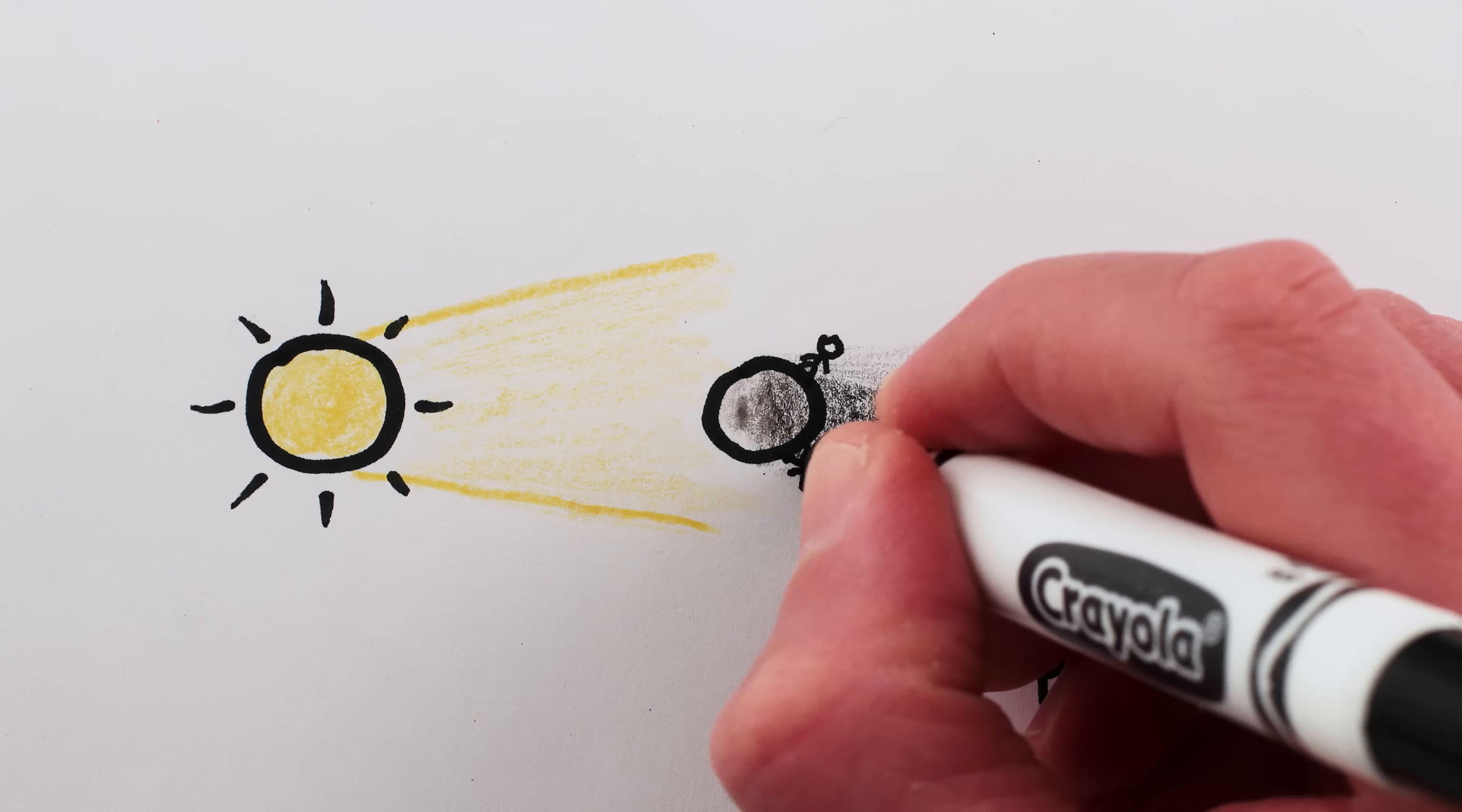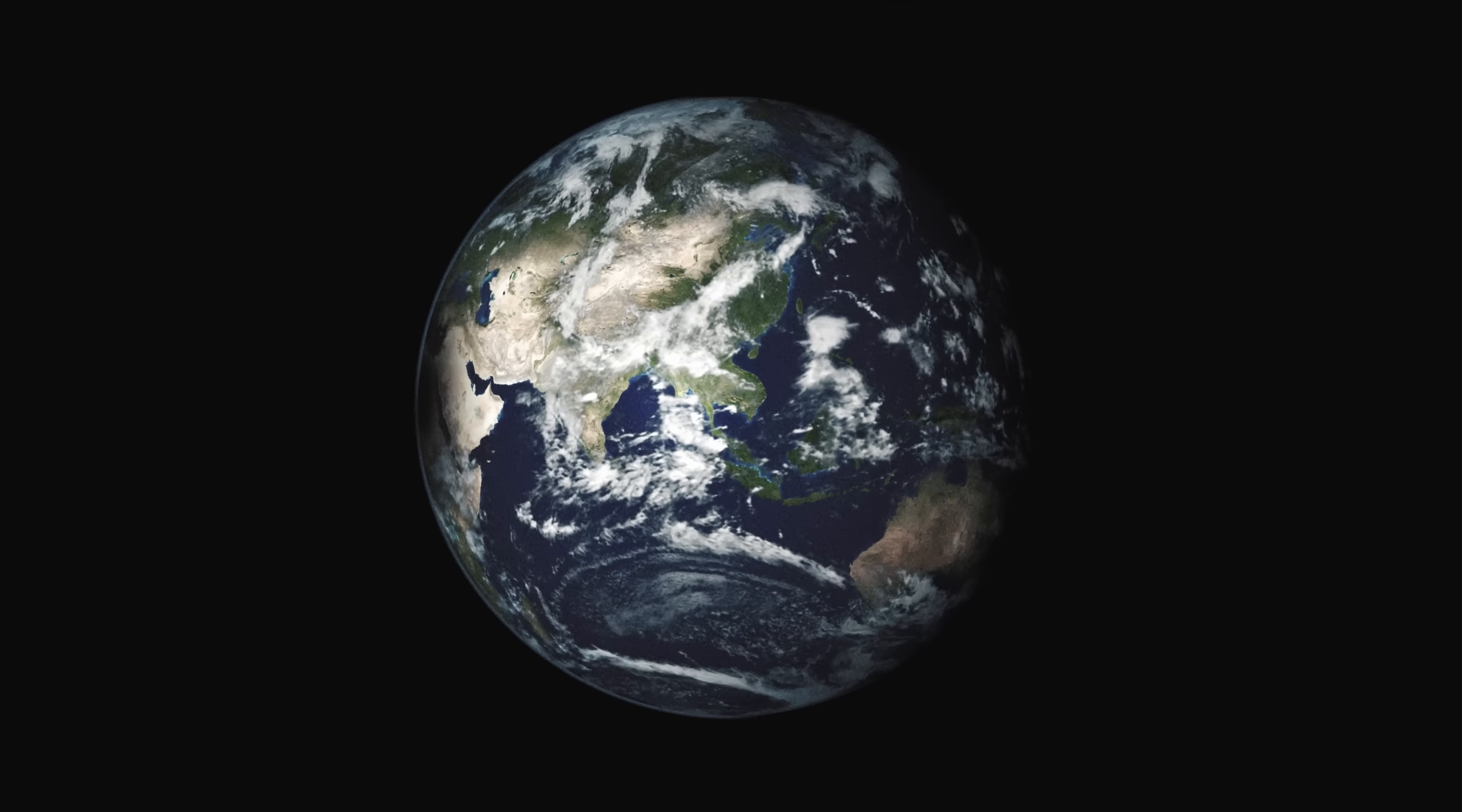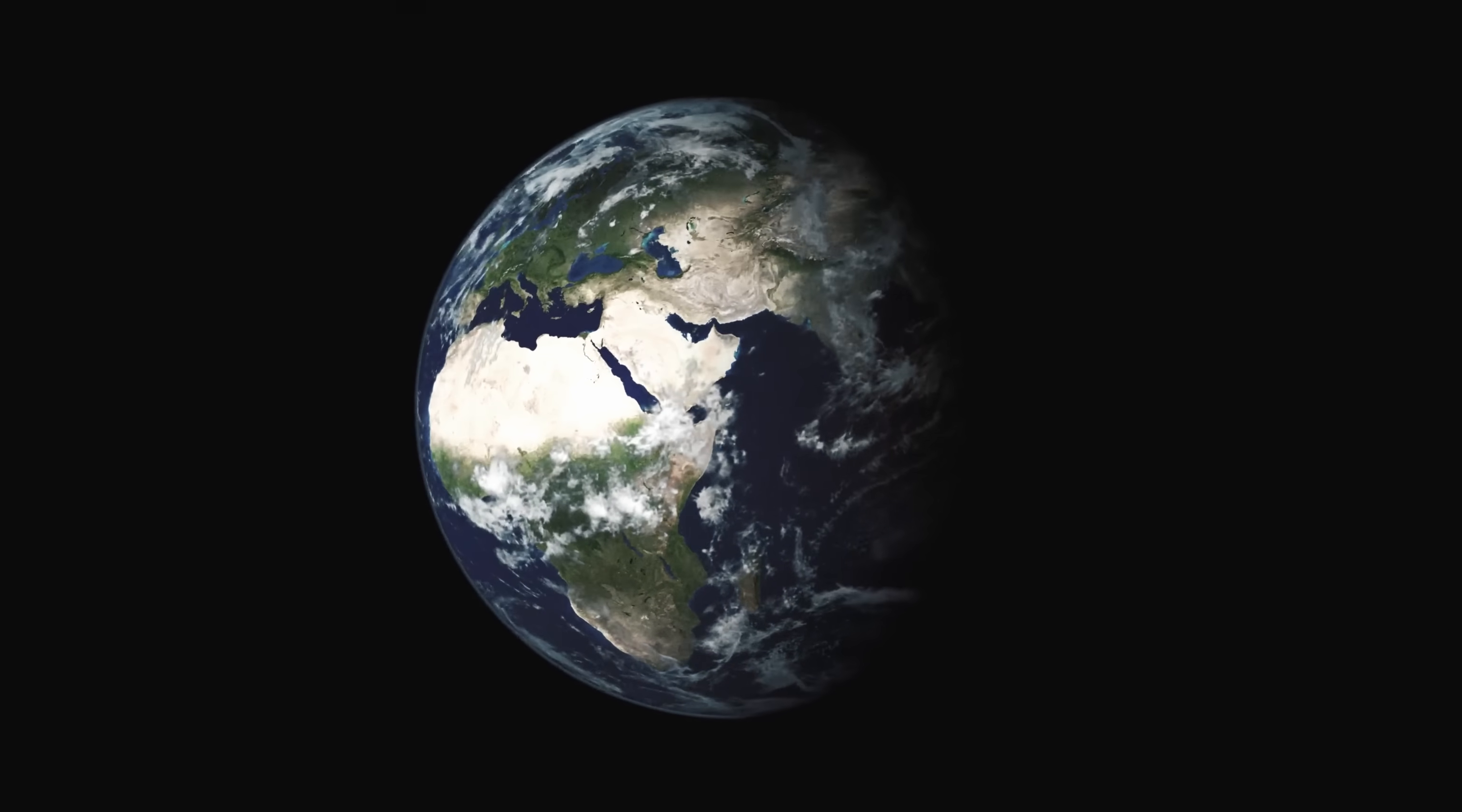When the Sun is eclipsed to us, the Moon's inhabitants on the side next to the Earth, if any such there be, see her shadow like a dark spot travelling over the Earth, about twice as fast as its equatorial parts move, and the same way as they move.